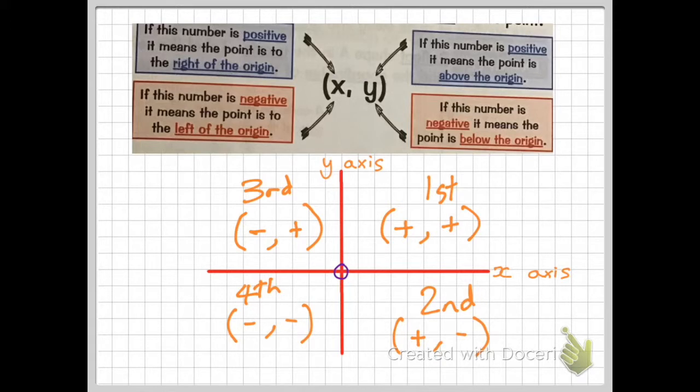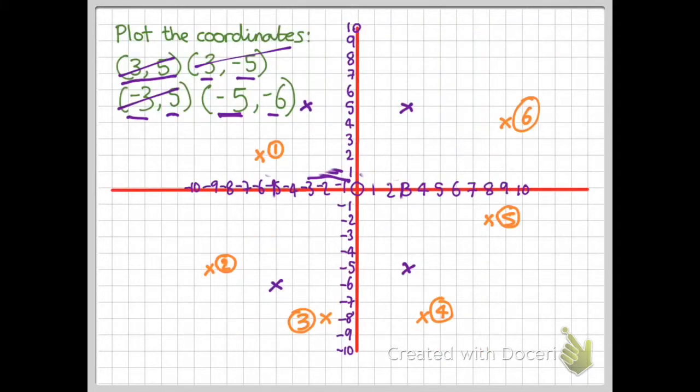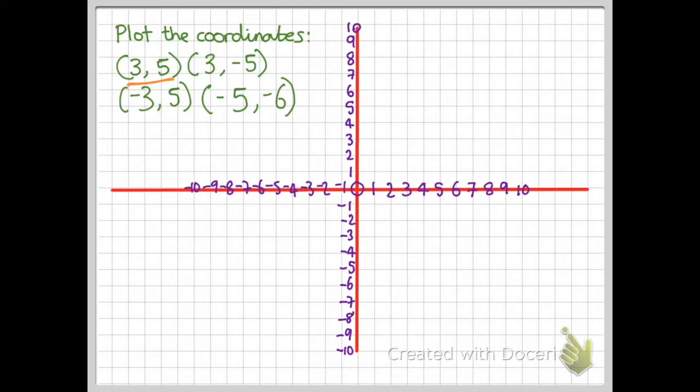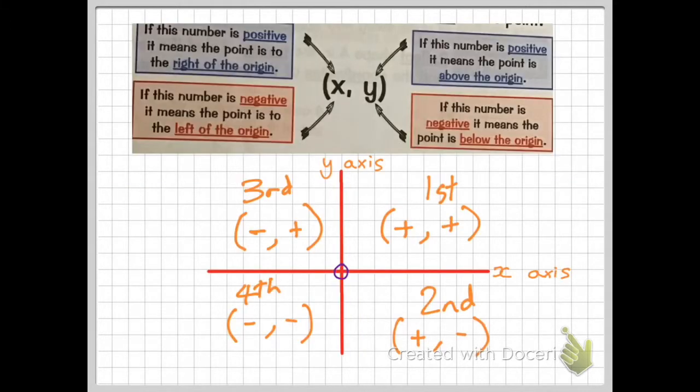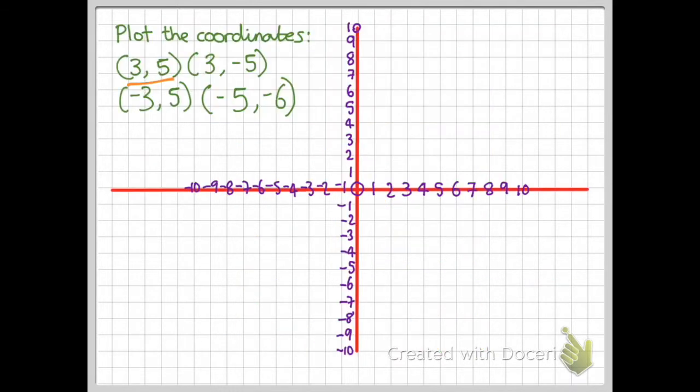So what exactly does that mean in real life? Well, this is exactly what it means. I'm going to look at this first one here, where it says (3,5). So I've got two positive numbers here. If I look back, if I've got two positive numbers, then it's going to appear in this first quadrant here. So I'm going to go across 3 and then up 5. So there's my first coordinate.